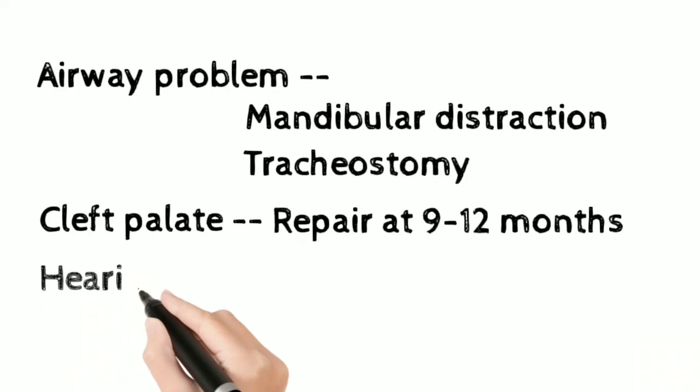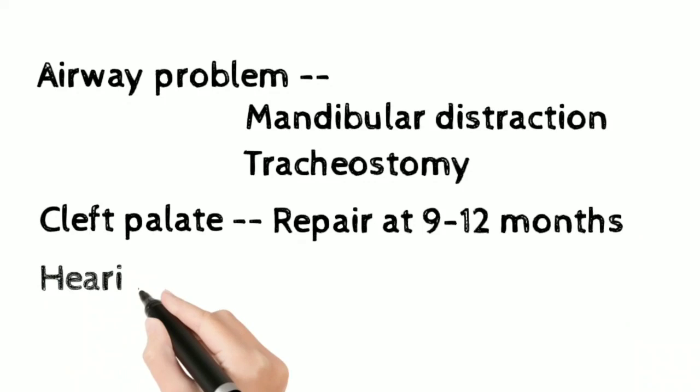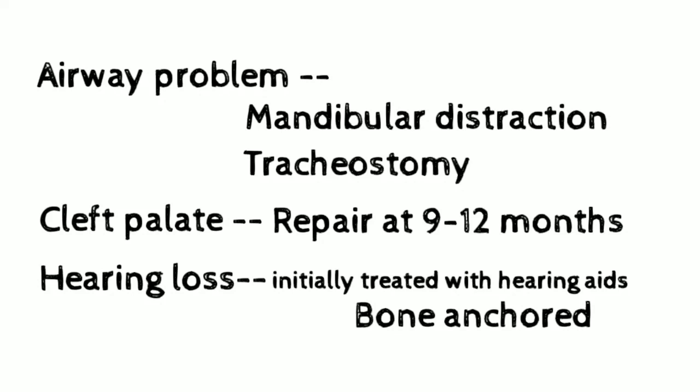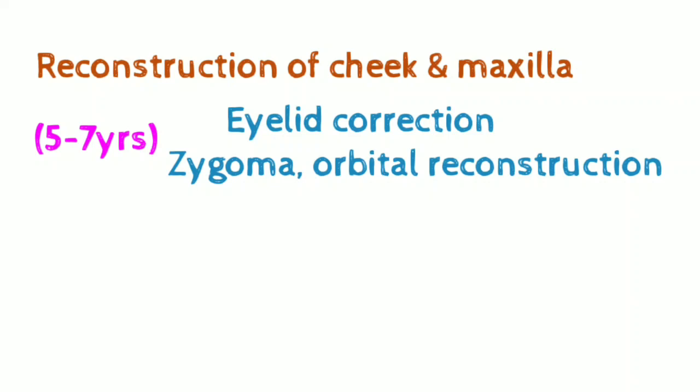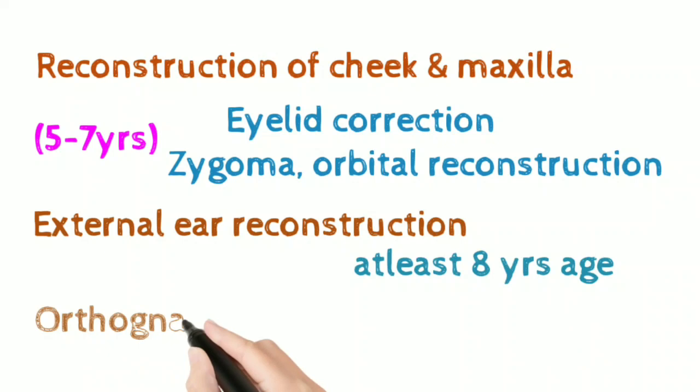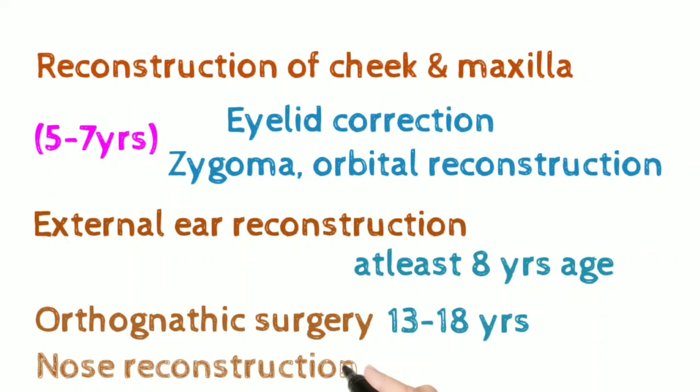If there is hearing loss, it is treated initially with hearing aids, specifically bone-anchored conduction hearing aids. Often reconstruction of the cheek and maxilla are needed, which includes eyelid correction, zygoma and orbital reconstruction, done at 5 to 7 years of age. For external ear reconstruction, the child has to be at least 8 years old. Orthognathic surgeries and nose reconstruction are done at 13 to 18 years of age.